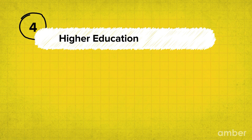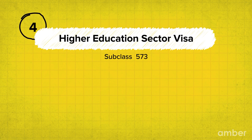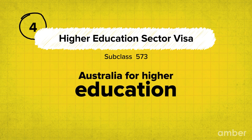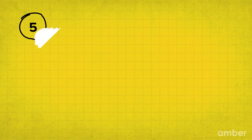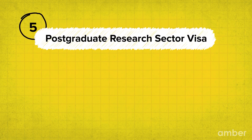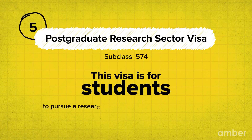The next category is the Higher Education Sector visa, subclass 573. You should select this category if you are travelling to Australia for a higher education such as a graduate degree, bachelor's degree, or a master's degree. Australia basically provides a visa to fulfil mostly all of your needs. The fifth category is the Postgraduate Research Sector visa, subclass 574. This visa is for students who wish to pursue a research-based master's or doctoral degree.